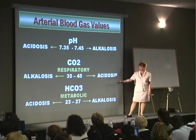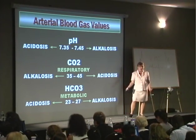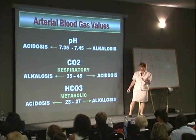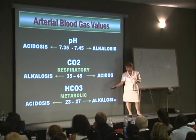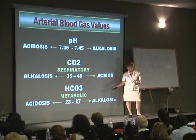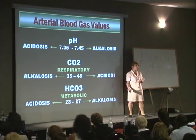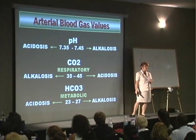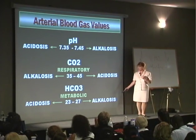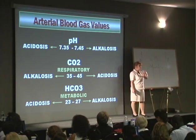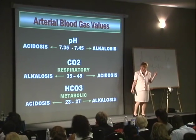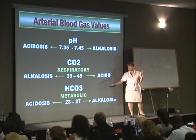Bicarb is a base. It's controlled by the metabolic system. The normal bicarb is the ages you wish you were — 23 to 27. If you wake up one day and have a bicarb greater than 27, you have too much base, therefore you're in a metabolic alkalosis. Whereas if you lose your base and your bicarb is less than 23, you're in a metabolic acidosis.